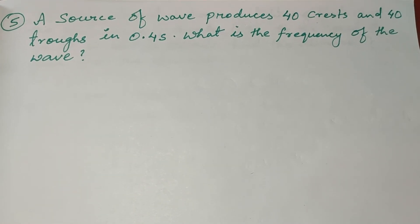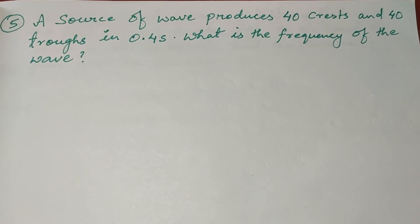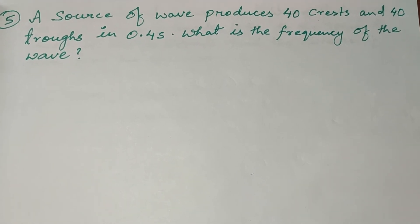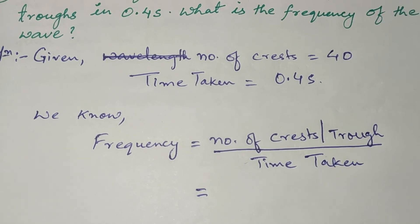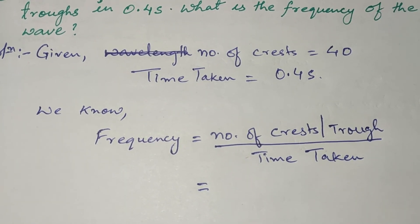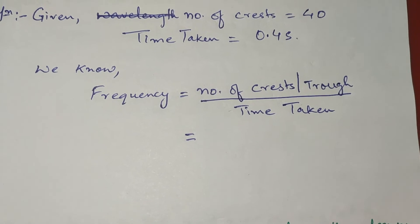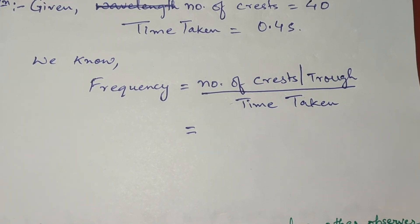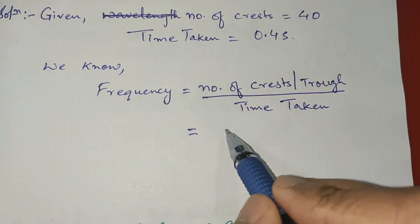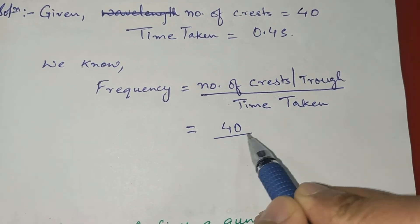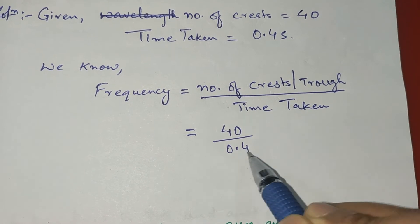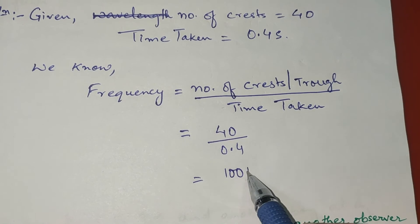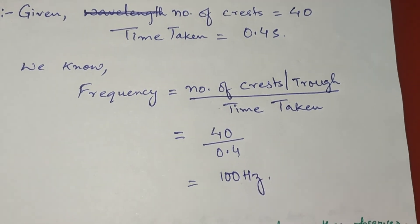The next question says a source of wave produces 40 crests and 40 troughs in 0.4 seconds. What is the frequency? Given: number of crests = 40, time taken = 0.4 seconds. Frequency = number of crests ÷ time taken = 40 ÷ 0.4 = 100 hertz.